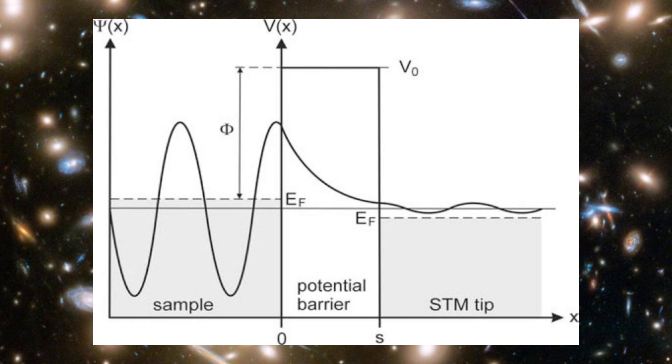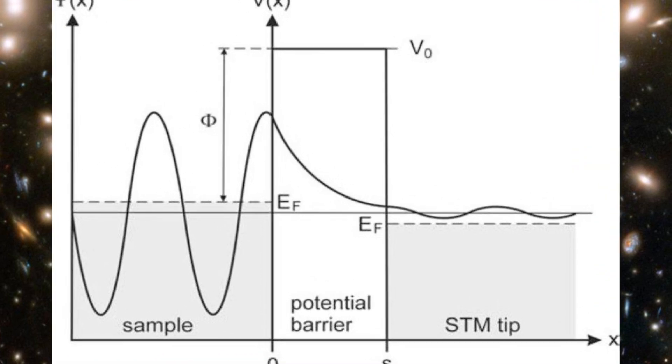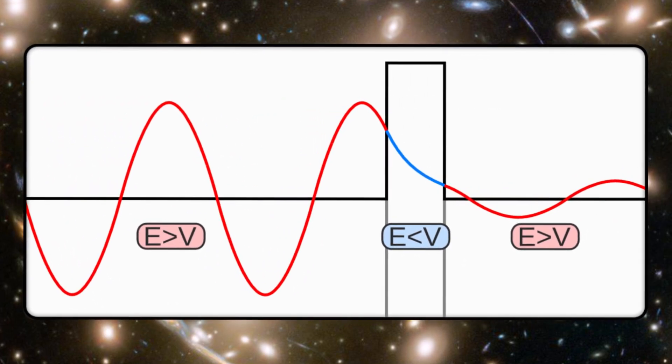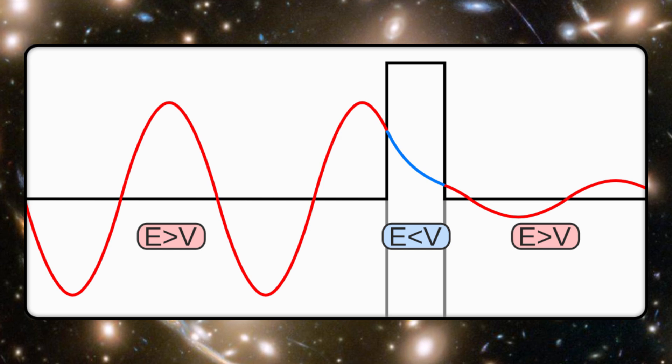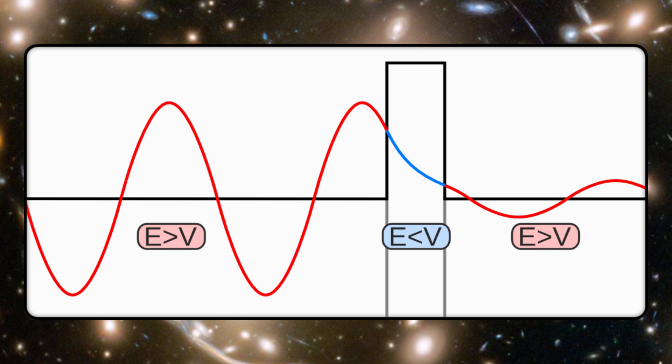Quantum tunneling lets particles pass through barriers they shouldn't have enough energy to overcome. It's not magic, it's probability. There's a small chance the particle's wave function stretches through the wall, and that chance becomes reality. Tunneling makes nuclear fusion in the sun possible, and we use it every day in scanning tunneling microscopes and flash memory.